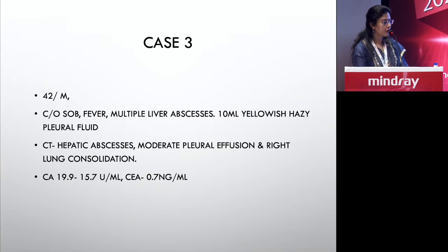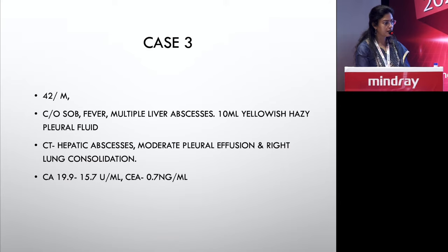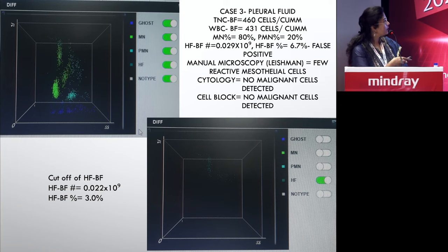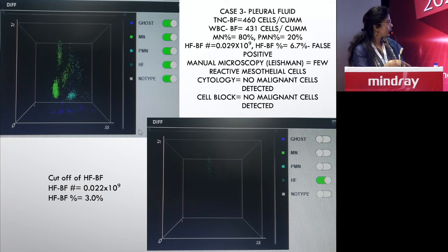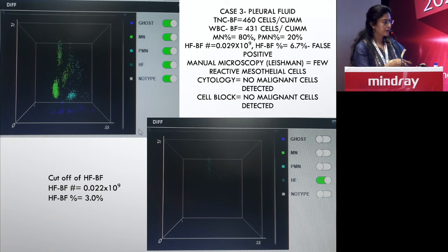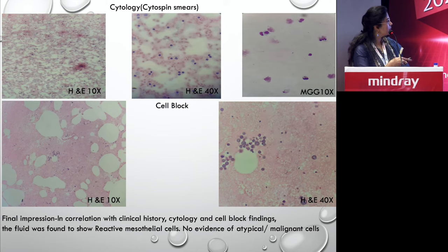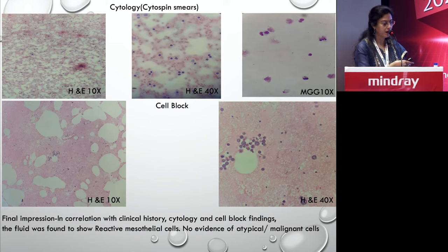Case three is a 42-year-old male with shortness of breath, fever, and multiple liver abscesses. CT showed hepatic abscess with right lung consolidation. CA 19-9 was around 15 and CA-125 was normal. We received 10 ml of yellowish hazy pleural fluid. The high fluorescence area showed around 29 cells in absolute count, at 6.7% — this was a false positive indication. Reactive mesothelial cells were mimicking malignant cells in the high fluorescent area. Cytology and cell block showed no malignant cells — only mesothelial cells on cytospin and only reactive cells on cell block. Not all cells appearing in the high fluorescent area are malignant cells.